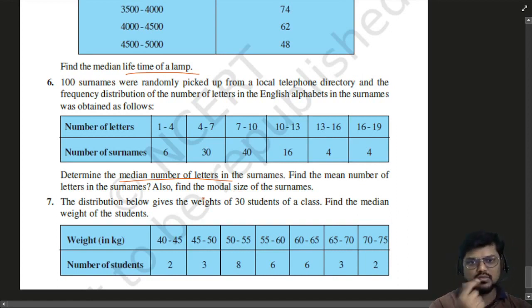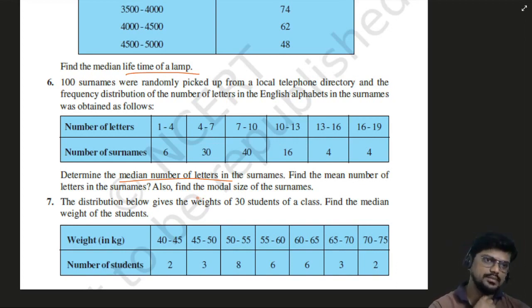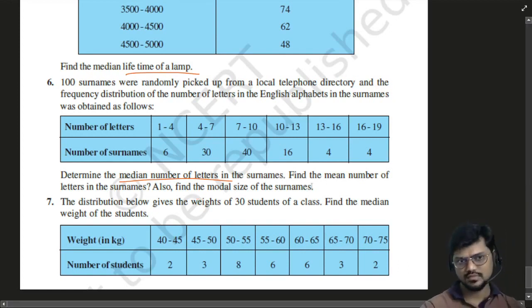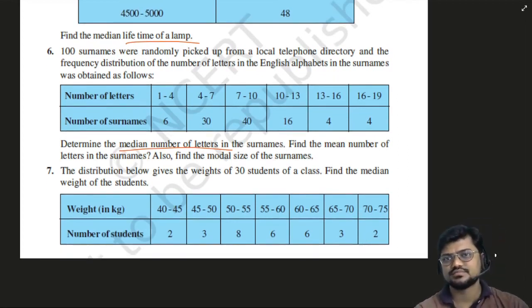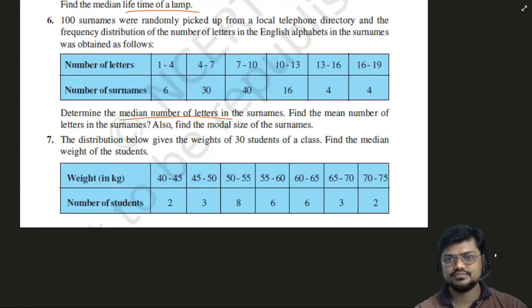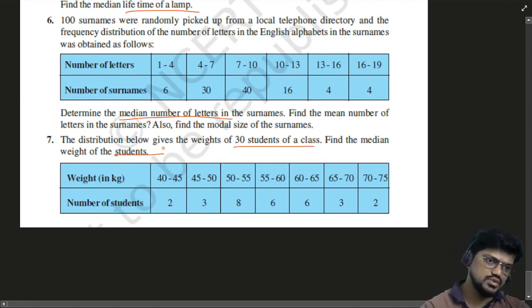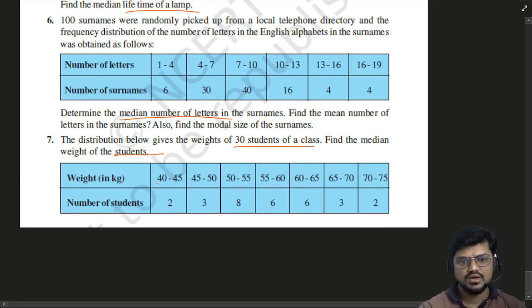This class is for CBSE as well as ICSE both combined. The next: the distribution below gives the weight of 30 students of a class — find the median weight. The data is continuous and the number of students is given. You have to use the same formula and solve it.